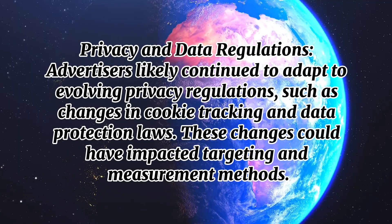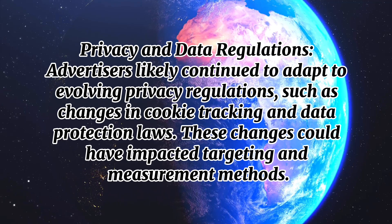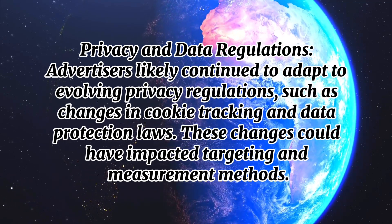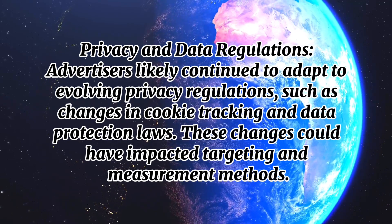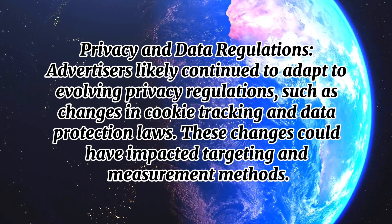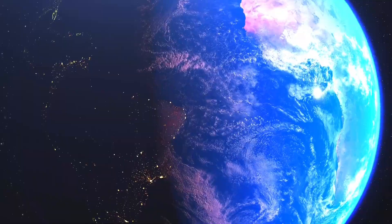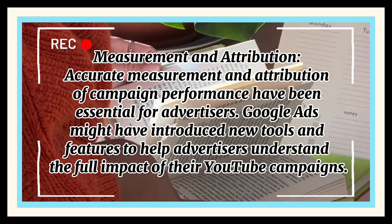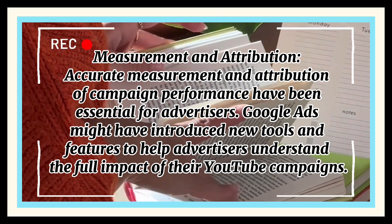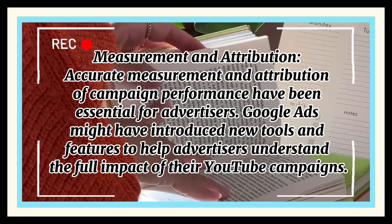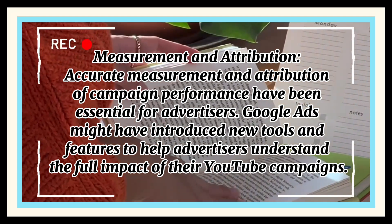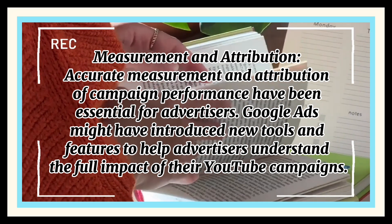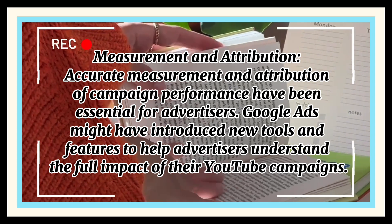Privacy and data regulations: advertisers likely continued to adapt to evolving privacy regulations, such as changes in cookie tracking and data protection laws. Measurement and attribution: accurate measurement and attribution of campaign performance have been essential for advertisers. Google Ads might have introduced new tools and features to help advertisers understand the full impact of their YouTube campaigns.